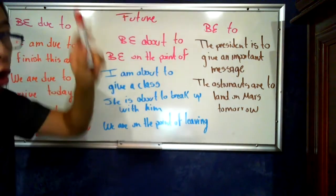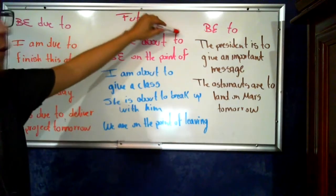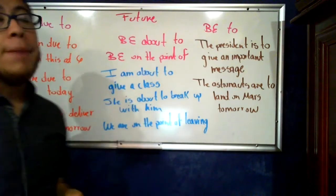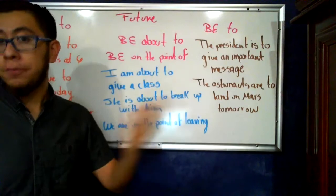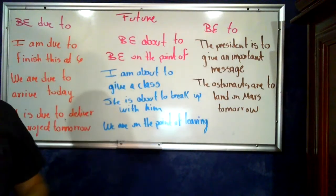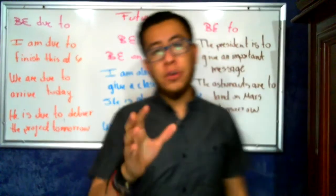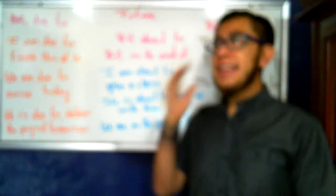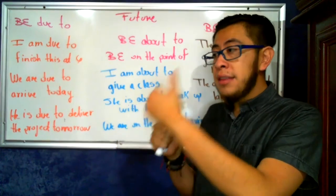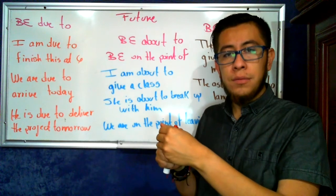Second, be about to or be on the point of. Important. Students, why after to, my verb goes normal, but after of my verb goes with ing. It is a preposition. So for example, I am about to give a class, but I was supposed to be about to or be on the point of. Simple. It is used to express ideas or things that are just about, that they are going to happen. They are going to occur really, really near to the present.